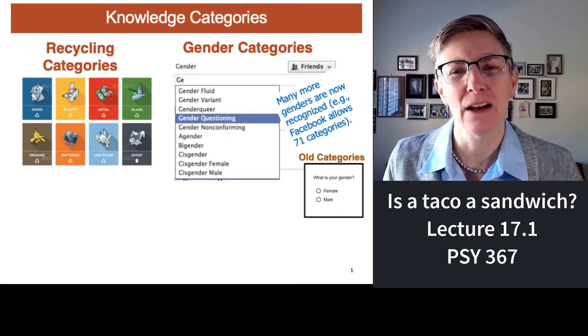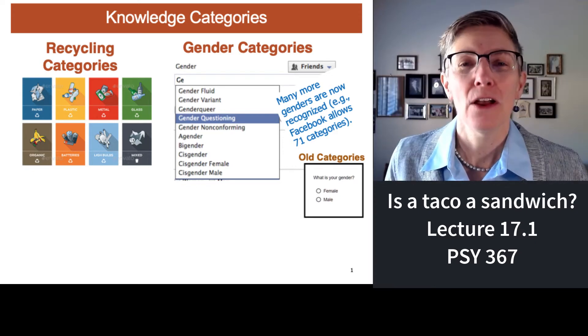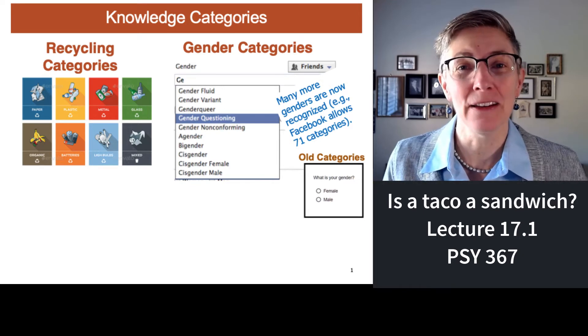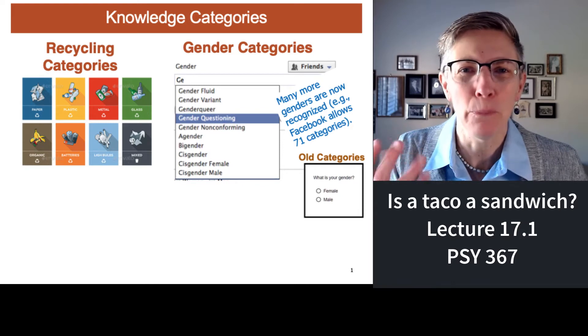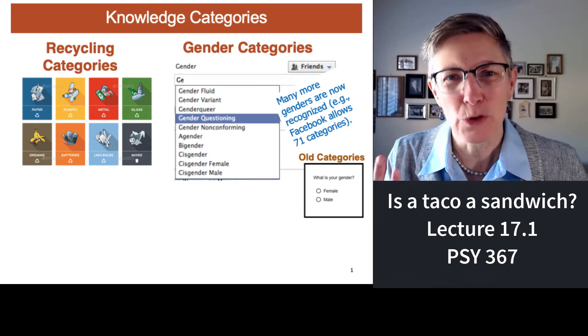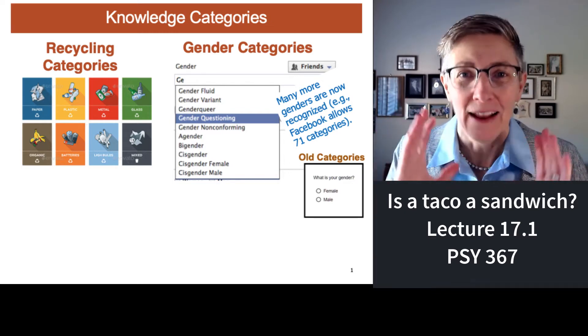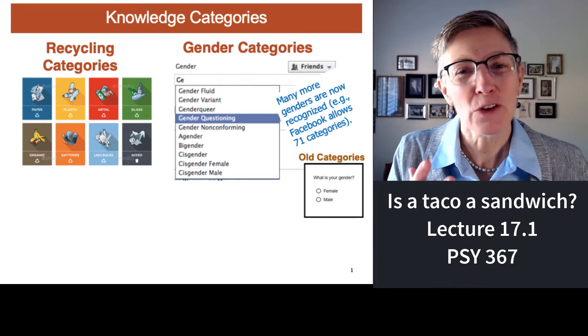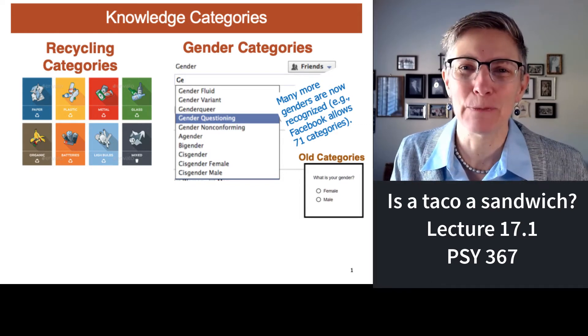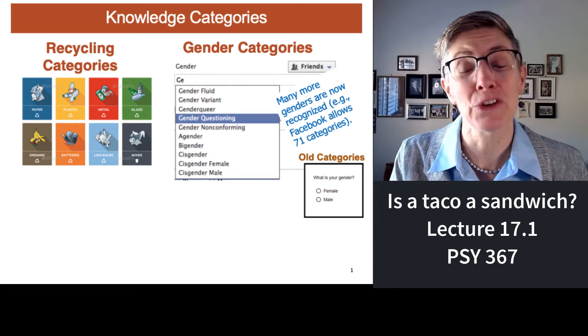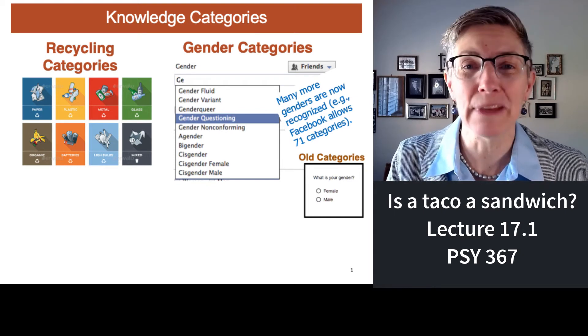Hello and welcome to our lecture on categorization. We finally finished memory and we're on to the question of how do you decide what groups items belong in. Those of you who have attended CSUN in person know that we have a lot of recycling bins on campus. I'm the one standing in front of the bins trying to figure out what category a foam cup or a lined cup belongs in. It seems obvious and automatic, and in this segment I'm going to try to convince you that there's more than meets the eye to categorization.